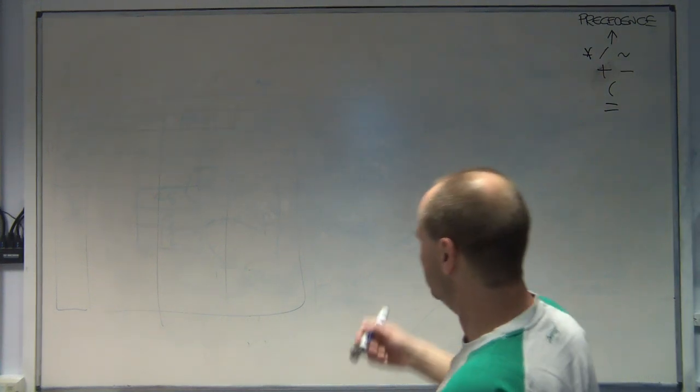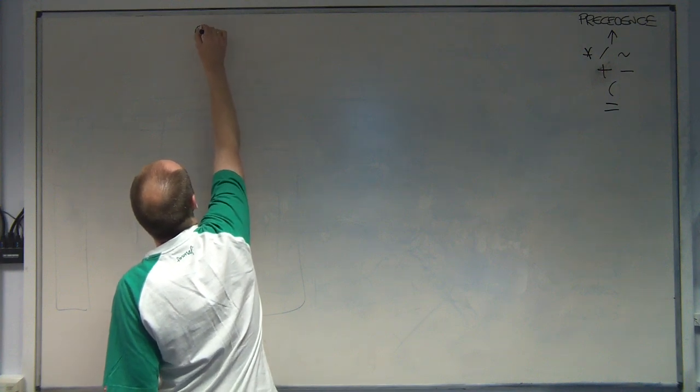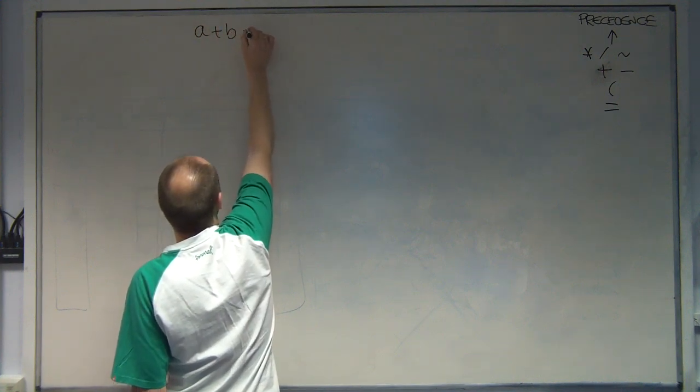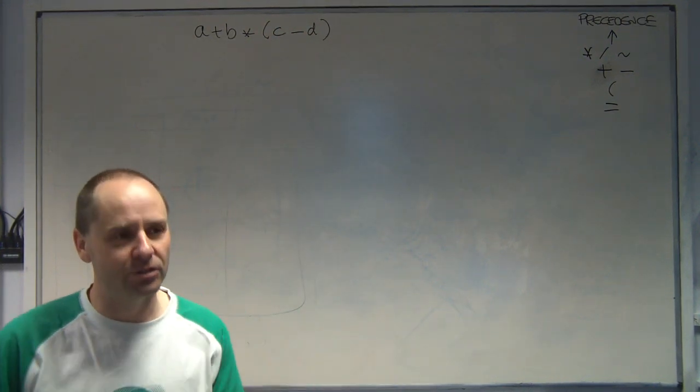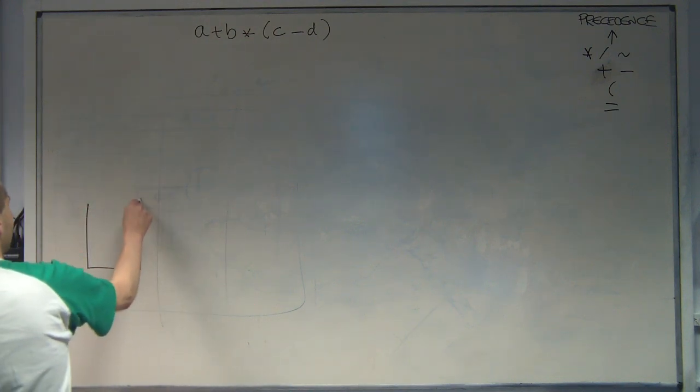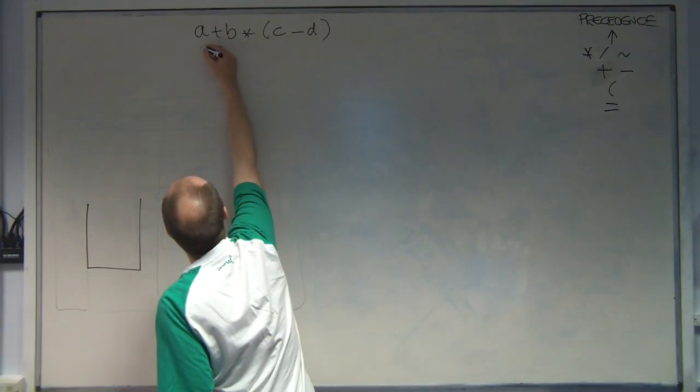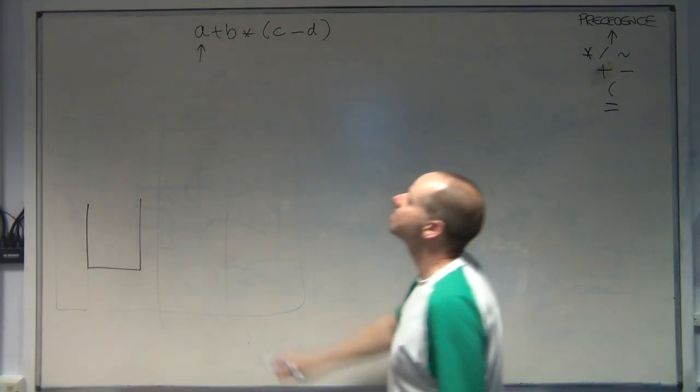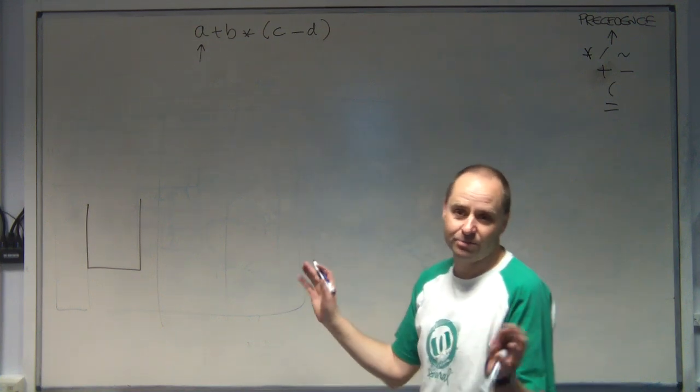Right, let's do a couple. We'll do an easy one to start with. A plus B times C minus D. So, nice little simple one. Right, so draw yourself a stack. Remember we're processing one character at a time on the input screen, just like a compiler or interpreter would do. It just looks one character at a time. You can't see the whole thing, that's why we have to do this.